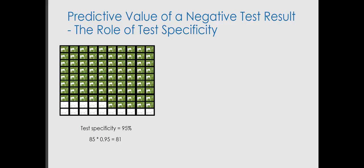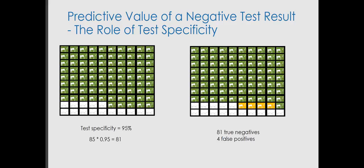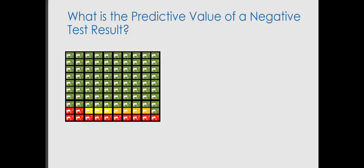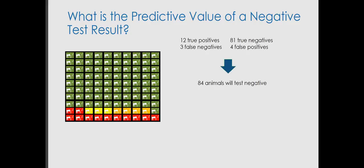The role of test specificity only applies to the cows that truly do not have the disease. The test had 95% specificity, so of the 85 cows which truly don't have the disease, it will correctly identify 81 as not diseased — but that also means there will be four false positives. Now, how do we get to the predictive value of the negative test result? We have 84 animals which will test negative, and 81 of the 84 are truly non-infected. So the negative predictive value is 81 divided by 84, so 96%. The cow that we are considering, which tested negative, has a 96% chance of not being infected.